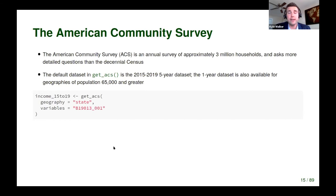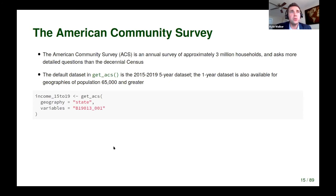The get_acs function is your workhorse for grabbing American Community Survey data. This function defaults to the 2015-to-2019 five-year ACS. There are two active ACS datasets: the one-year ACS, which covers geographies of 65,000 population and greater; and the five-year ACS, averaged over a five-year period to address sample size issues, allowing you to get data down to the census block group. The code on screen gets median household income — variable B19013_001 — at the state level from the most recent five-year ACS.